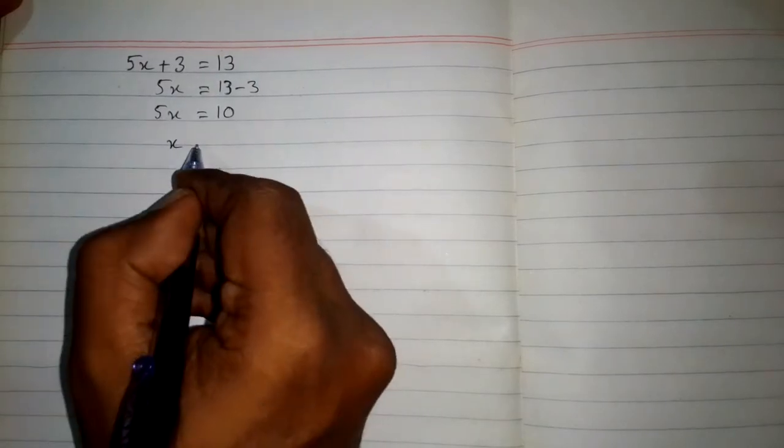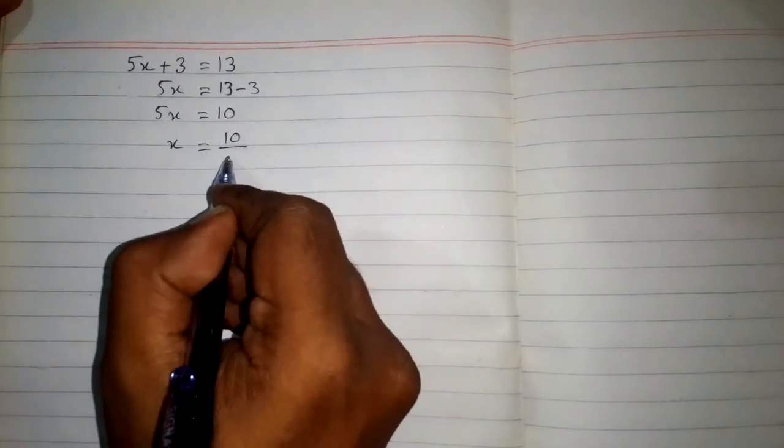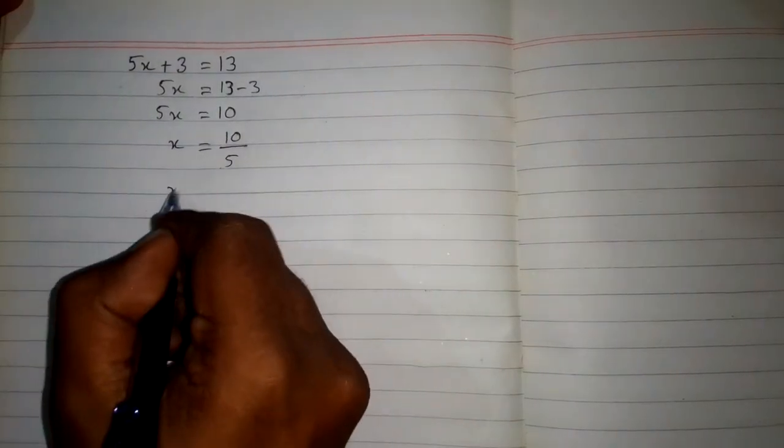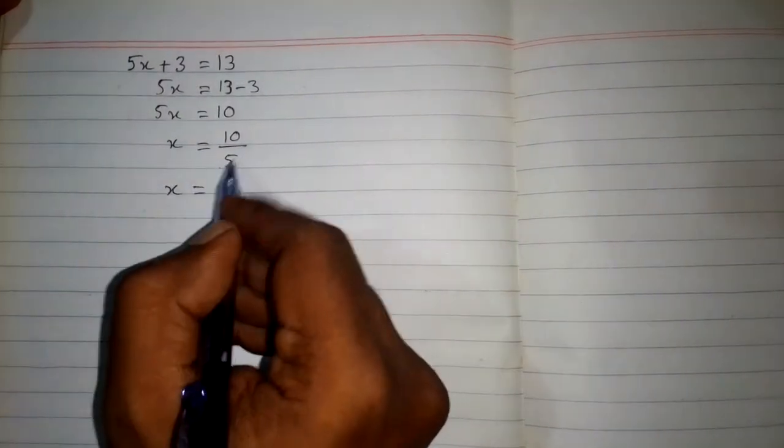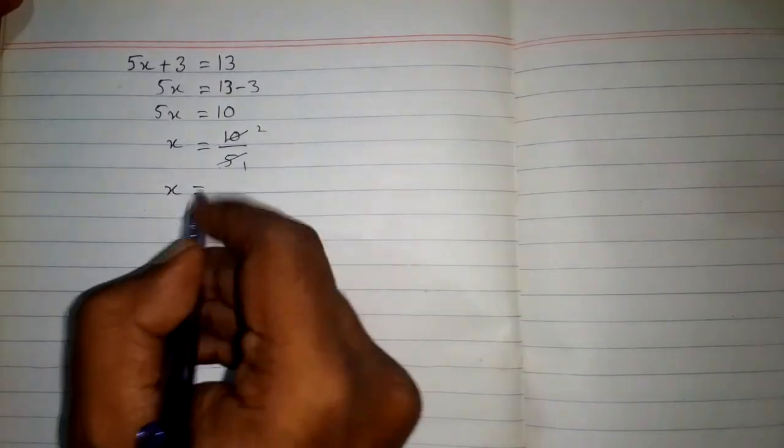The multiplication will become division on the other side of the equation. So when we take 5 on the other side it will divide 10. We have x equals 10 upon 5, and 5 divides into 10, so the value of x is 2.